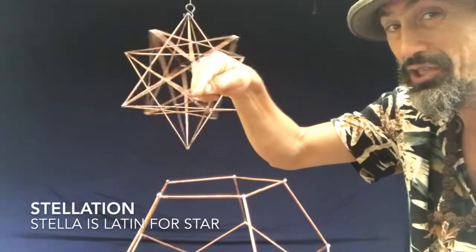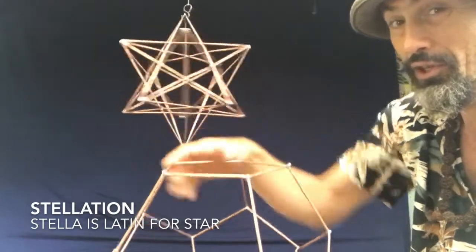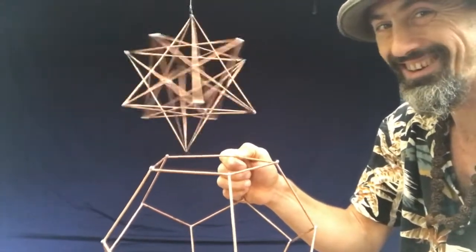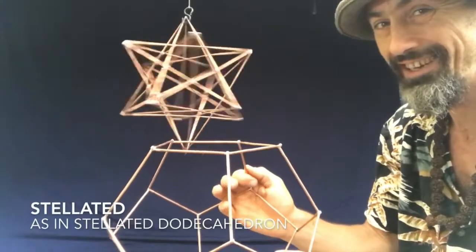a stellation, which means a star point. And so the dodecahedron gets turned into a star. The word that turns it into a star is stellated.